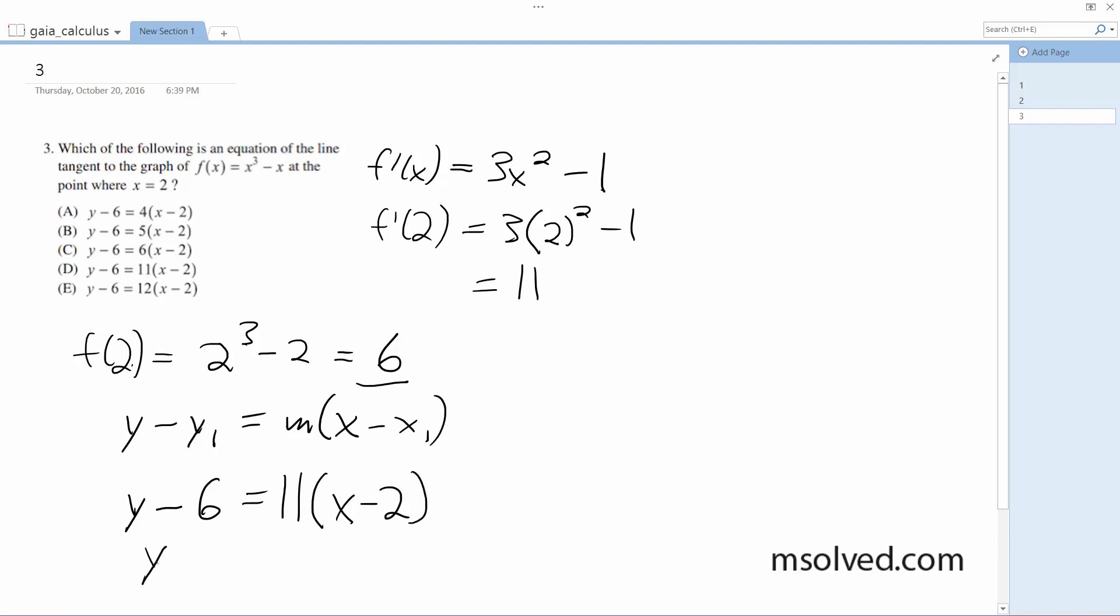So we get y minus 6 is equal to 11x minus 22, plus 6, plus 6. And what we end up with ultimately is y is equal to 11x minus 16. That's it.